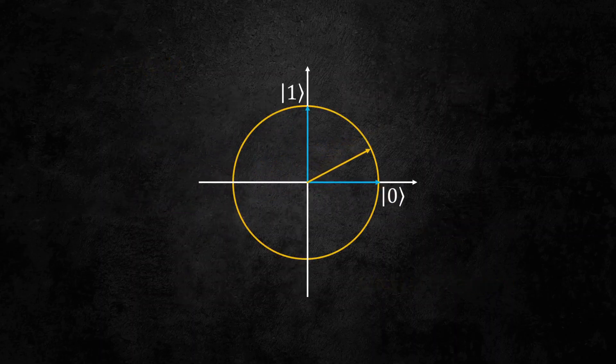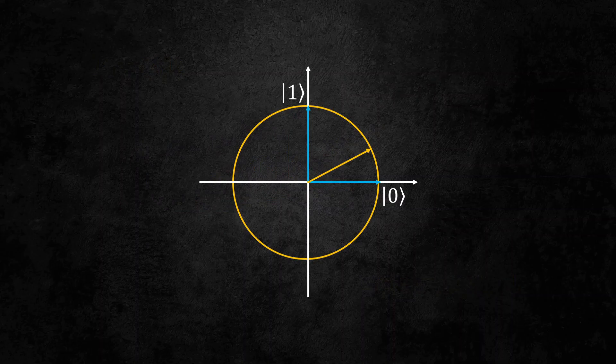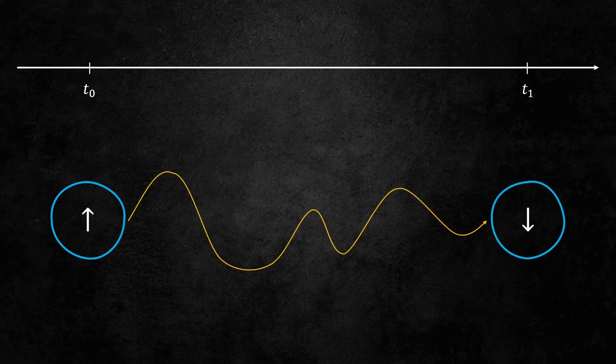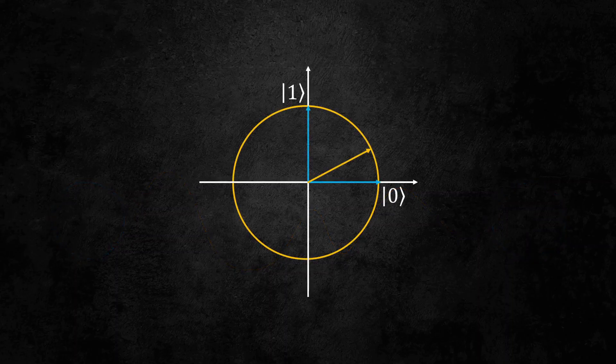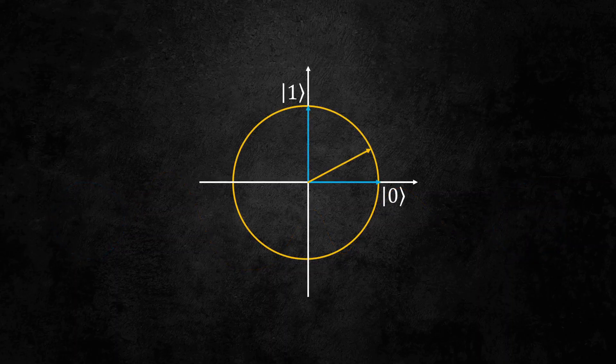We now can represent any quantum state by a vector on the circle. And the square of the coordinates gives us the probabilities of measuring 0 and 1. The next question is, how do we represent a state evolving in time? We know the states before and after must lie on the circle. Because of this reason, functions describing time evolutions must be rotations centered on the origin.